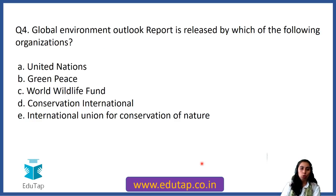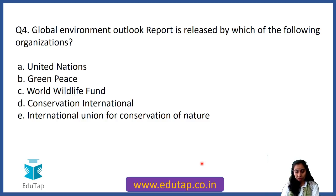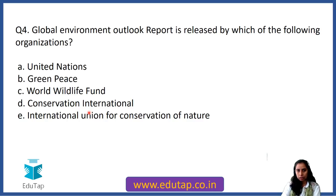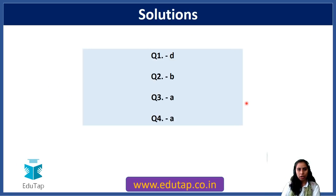Question 4: The Global Environment Outlook report is released by which organization? It is important to know the releasing body, the theme, and key findings. The answer is United Nations — specifically it is UNEP's flagship report, the Global Environmental Outlook report, which has been recently released. So we are done with the questions. Tell me your score in the comments!